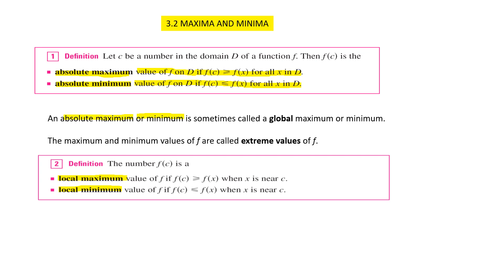An absolute maximum or absolute minimum is sometimes referred to as a global maximum or global minimum. The maximum and minimum values of functions are also called extreme values. The local maximum value of a function f is when f(c) is greater than or equal to f(x) when x is near to point c. The local minimum value is when f(c) is less than or equal to f(x) when x is near to point c.